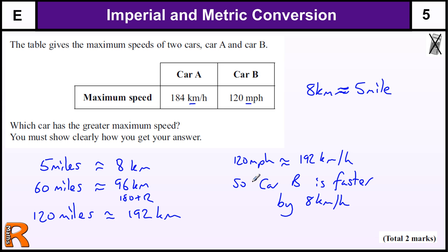But this way is probably the easiest. And if you did do the other way around, you should get the answer 115 miles per hour for this one.